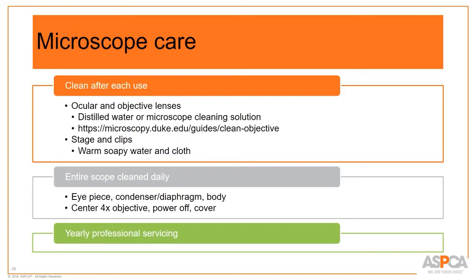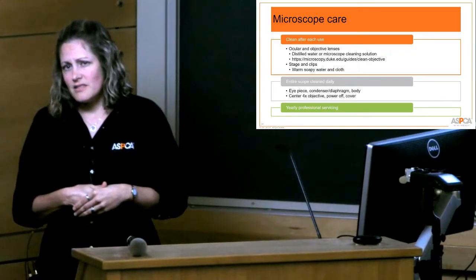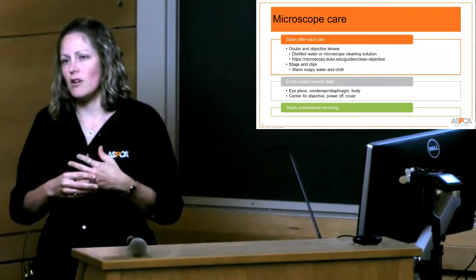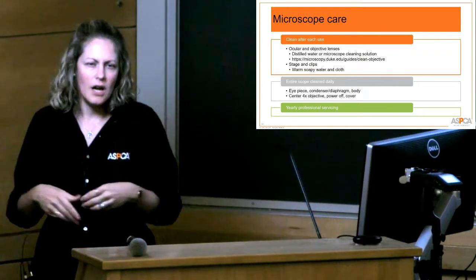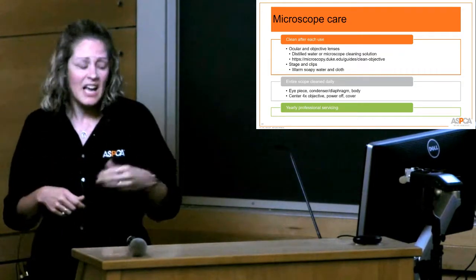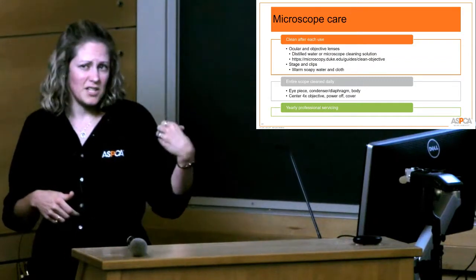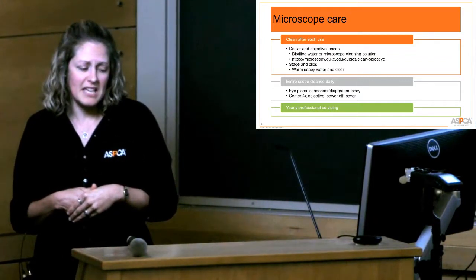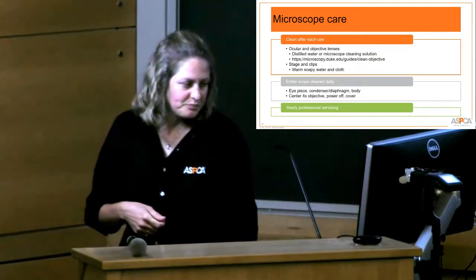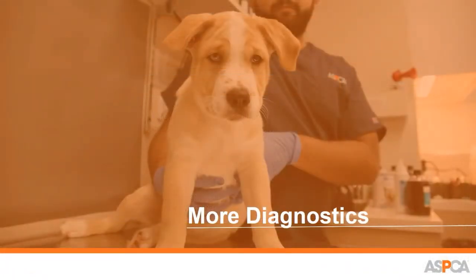Microscope covers are inexpensive and really help keep dust out. Ideally, the microscope should be professionally serviced every year — someone who knows what they're doing takes it apart and cleans it. Look for microscope service technicians in your area; check labs or schools with microscopes. Let them know you're a shelter — they may even donate the service. At the shelter I was at, someone came in once a year to clean our microscope for free.